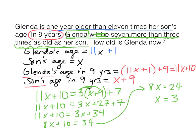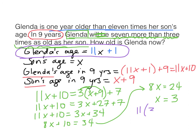Hold on — that's not our answer. X equals 3 is the son's age. The question asks how old is Glenda now. Go back to the problem: Glenda's age now is 11X plus 1. So it's 11 times 3 plus 1 — that's 33 plus 1. Glenda is 34.